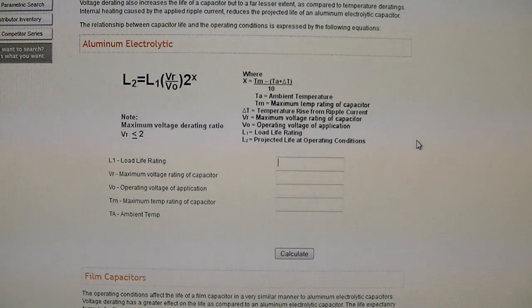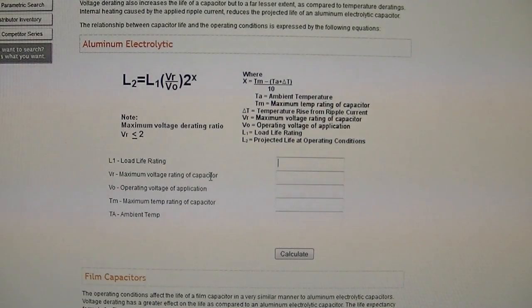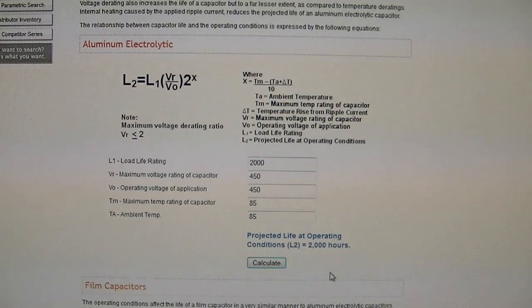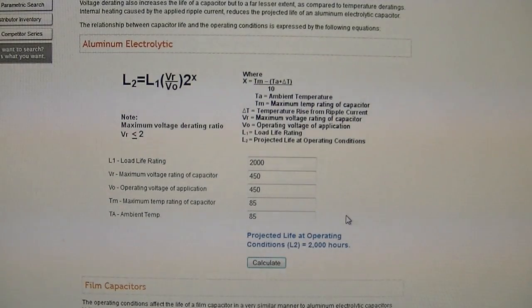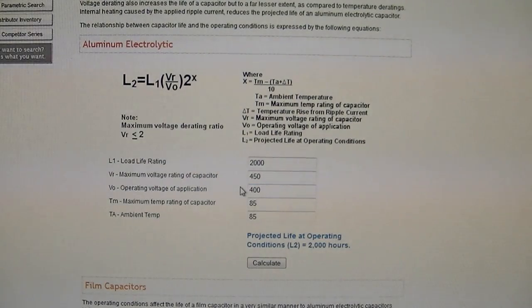Load life rating - that is the 2,000 or 8,000 or 10,000 hours I was talking about. Then we have the maximum voltage rating, the typical operating voltage in your application, maximum temp rating, and the ambient temperature. So let's start off with your average run-of-the-mill generic electrolytic, which is 2,000 hours of life. Let's say it's a 450 volt cap. And typically they are 85C. And when I hit calculate, it should give me 2,000 hours. So now we can start playing around with these parameters. You should not be running your cap right at the maximum voltage all the time. So let's say our actual circuit's running at 400. Now we got to 2,250. How about if we go to 350? A little bit more. But not a huge difference.